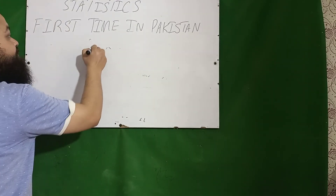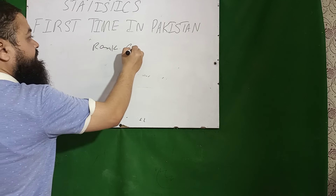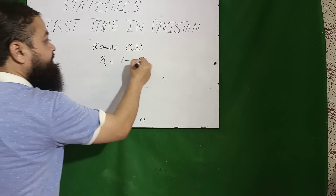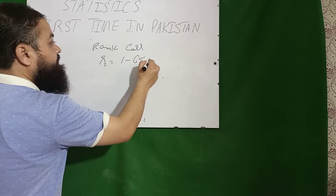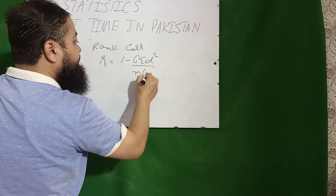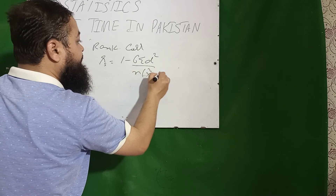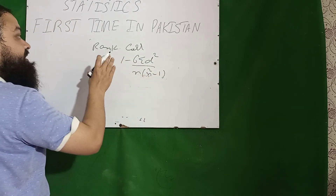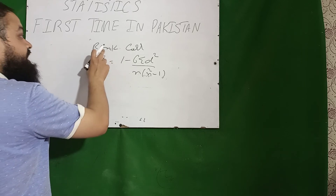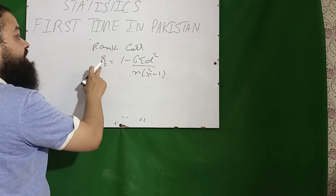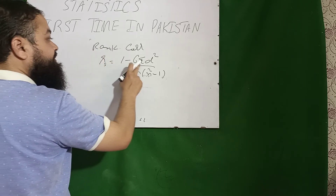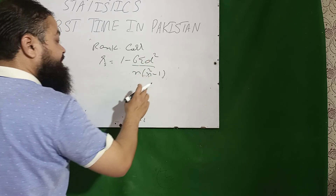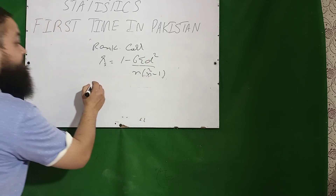Dear students, the rank correlation formula is: rs = 1 − 6Σd² / [n(n² − 1)]. This is the formula you will have to learn, and that is the correct option in the exam.